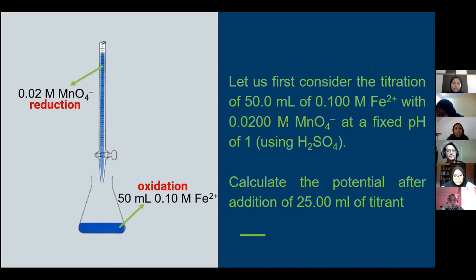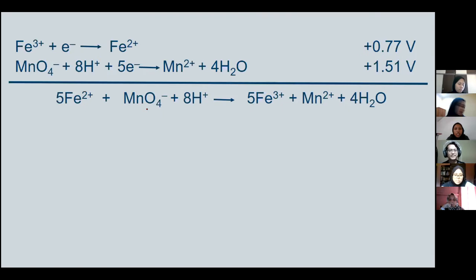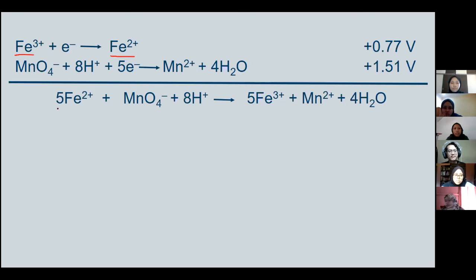As stated, our analyte Fe²⁺ undergoes oxidation and our titrant MnO₄⁻ undergoes reduction. These two are the half-equations for this titration. From these half-equations, we can write an overall equation and proceed with the calculation. But before that, can someone tell me why the stoichiometry of Fe³⁺ and Fe²⁺ is 1 in the half-equation, but 5 in the overall equation?